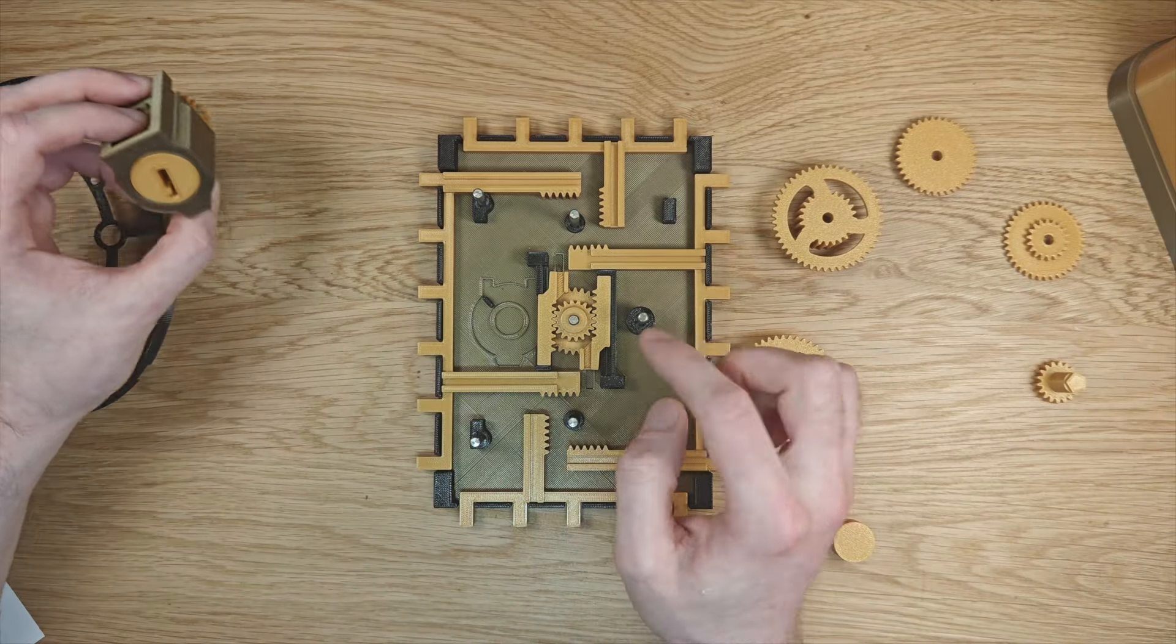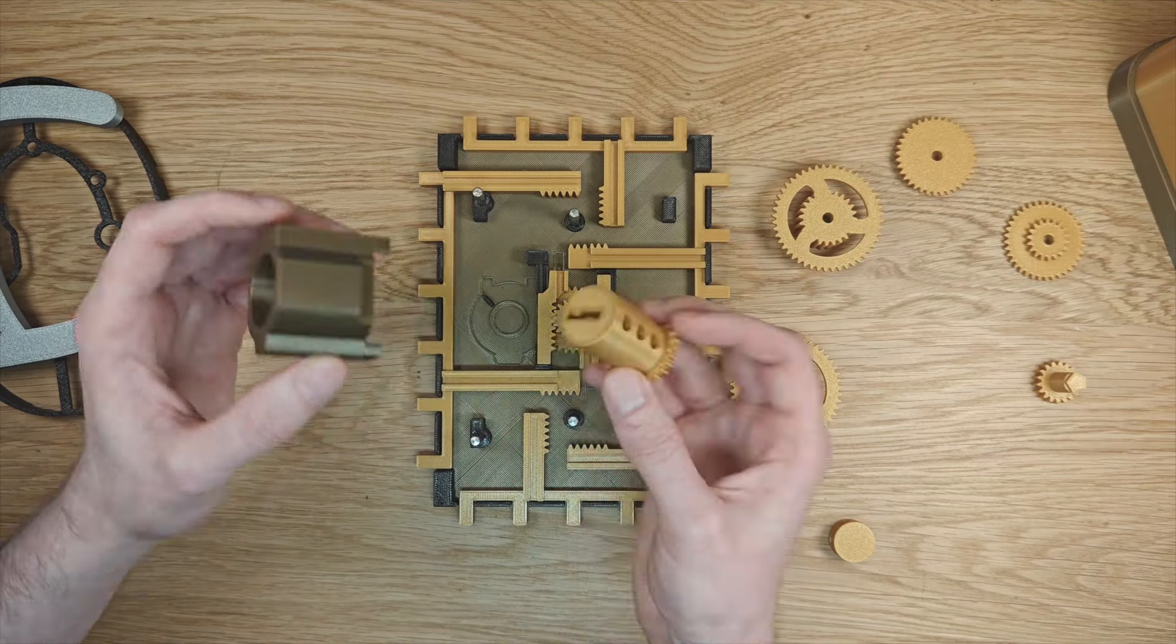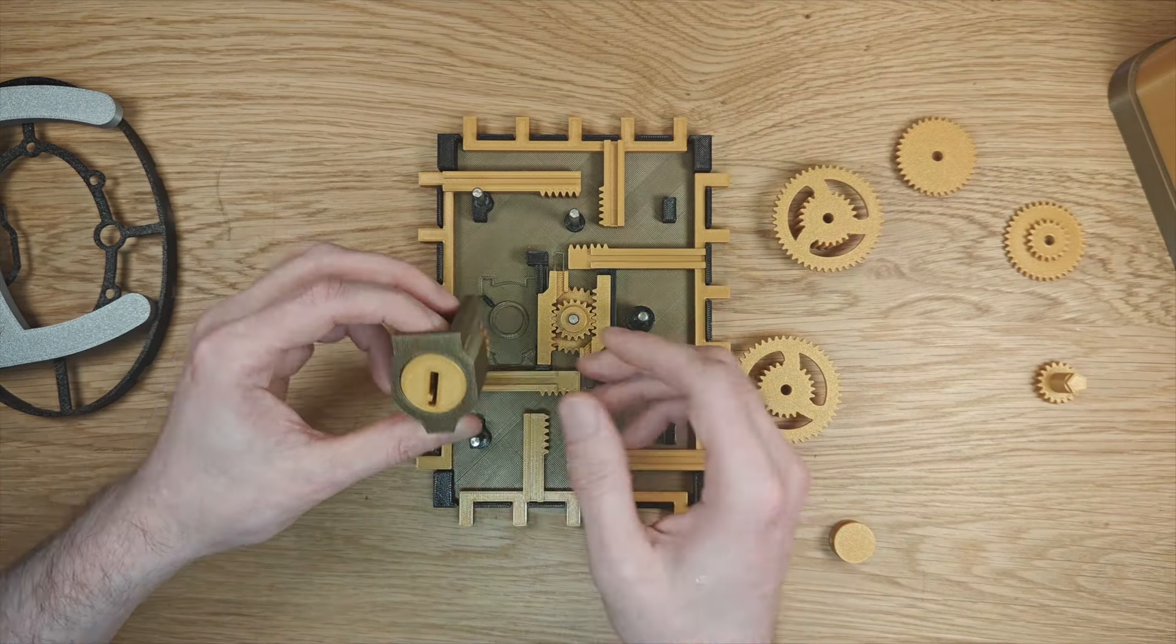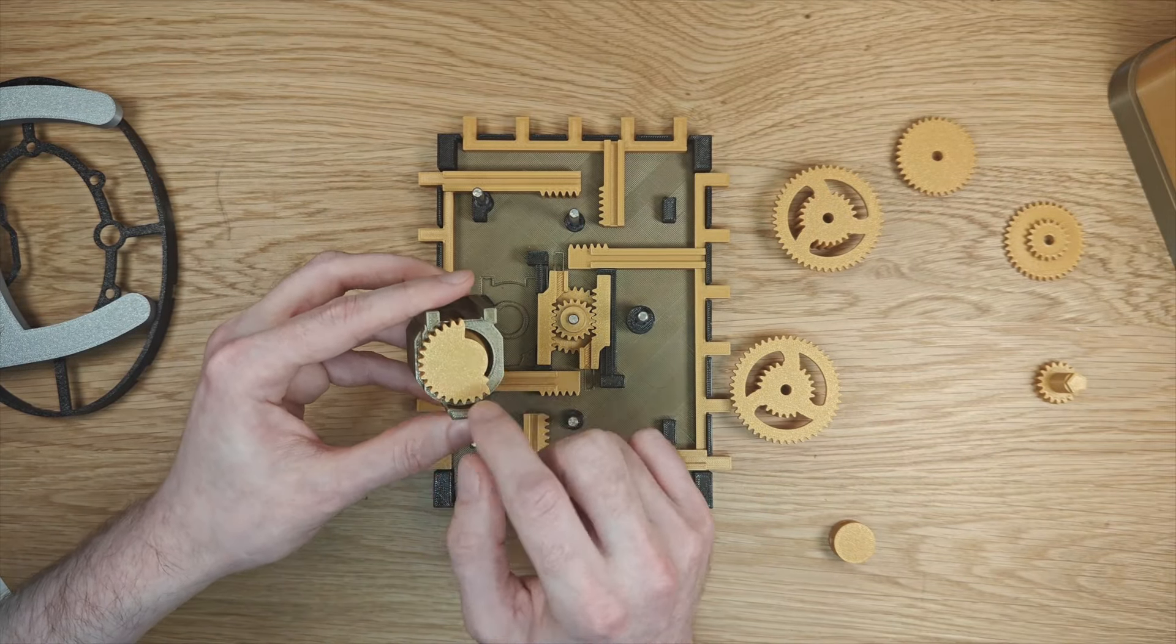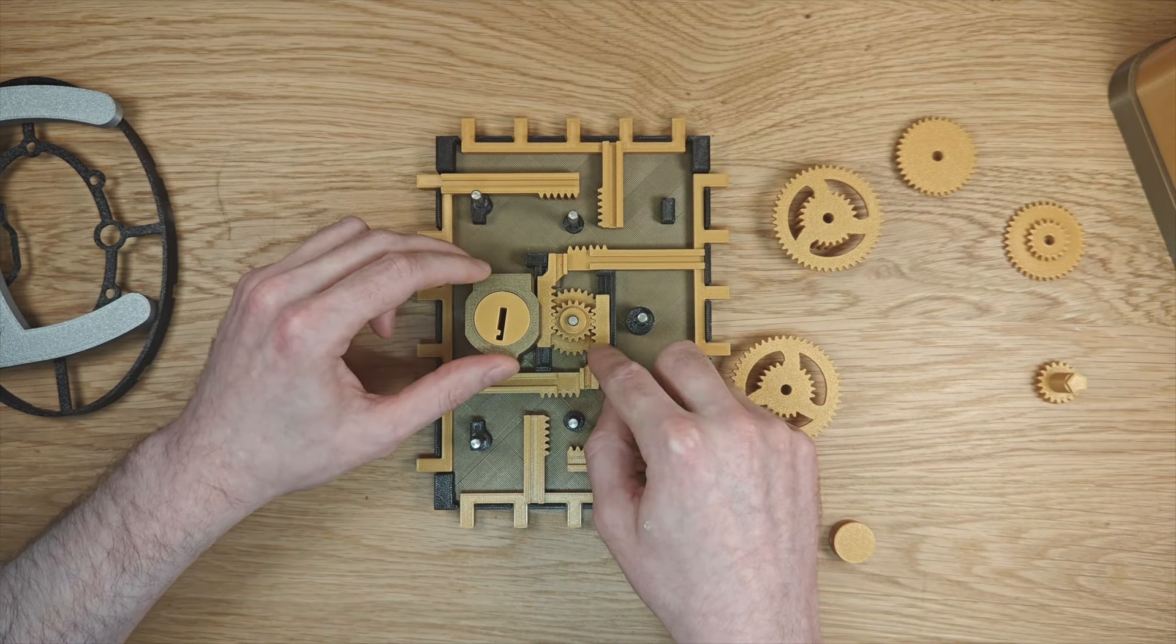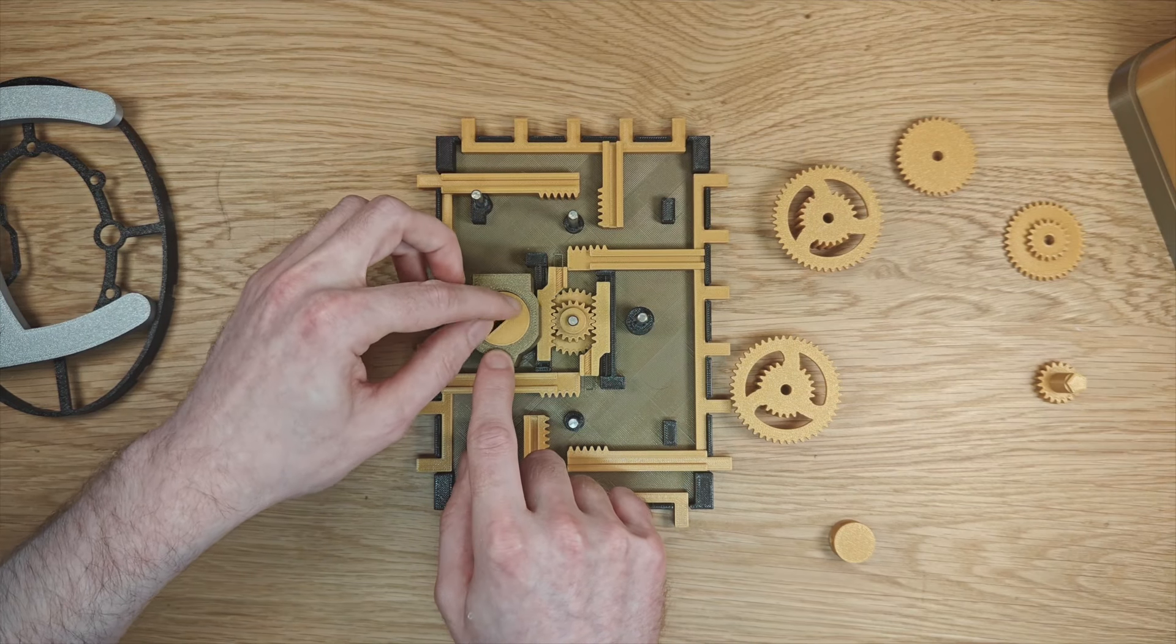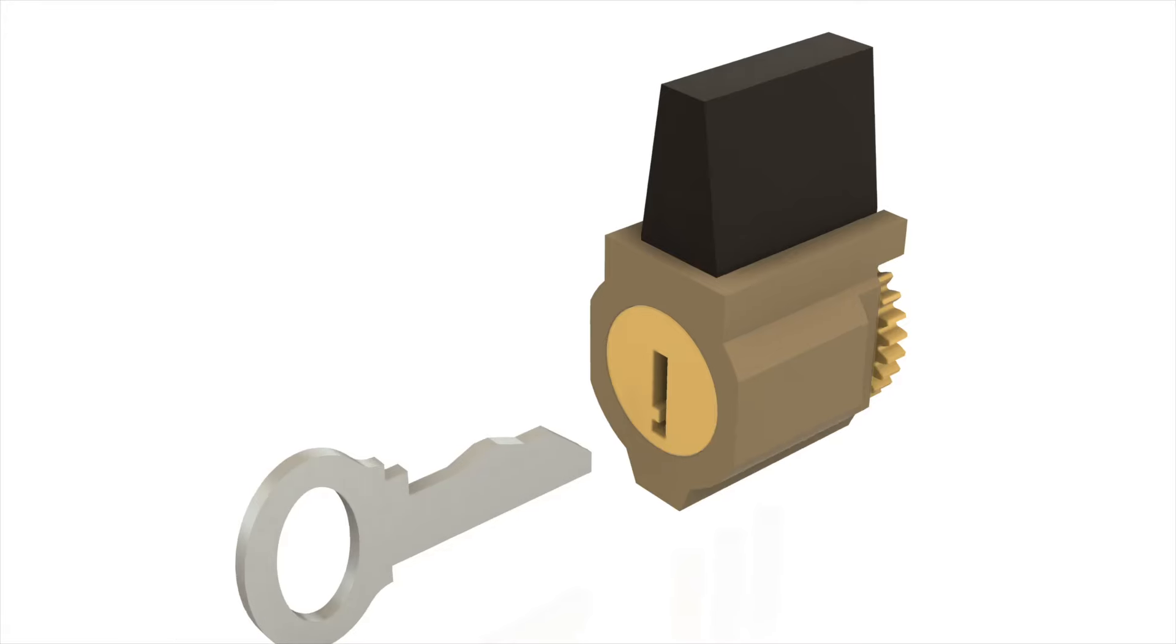So you might be wondering how does this interface with the actual key lock. I have the pieces of the lock here and you might be able to tell that this is the keyhole and connected to the keyhole on the back there is this gear. This is going to sit in place just like that and when you insert the key and turn it you can see it's going to retract the bolts and let you open the door.